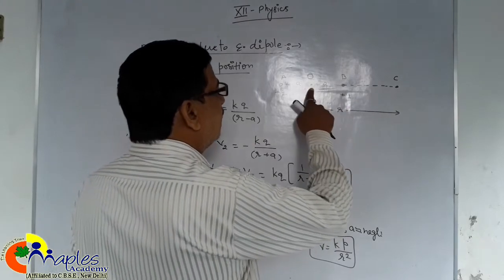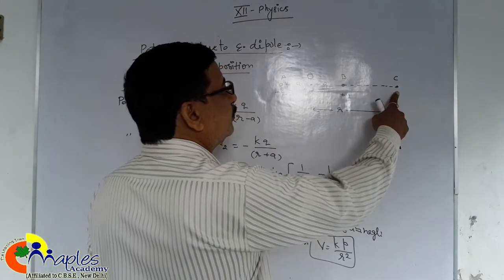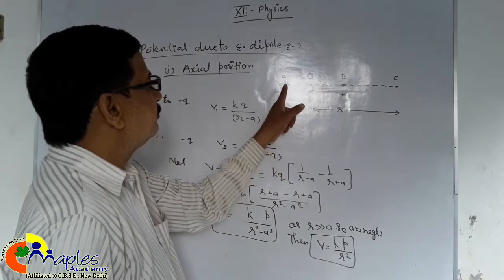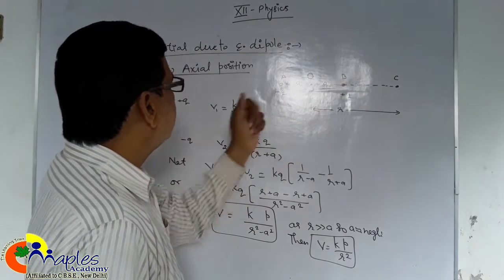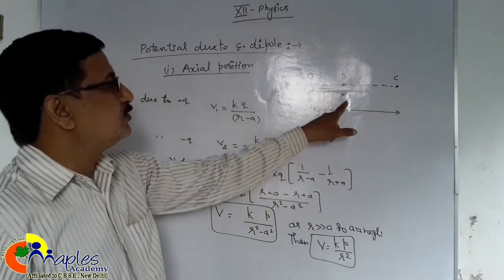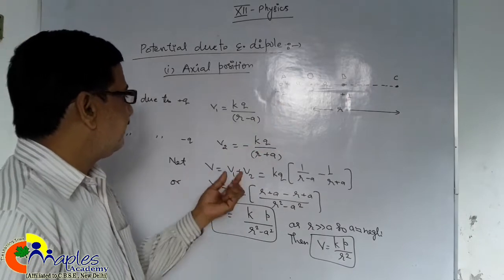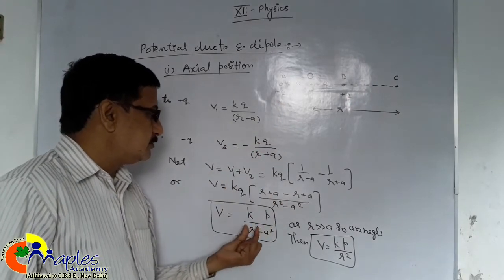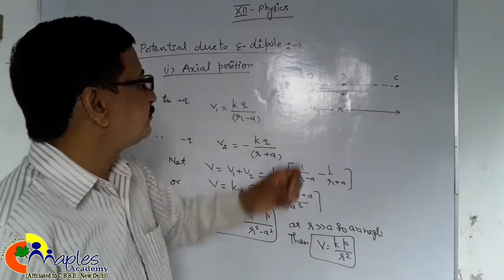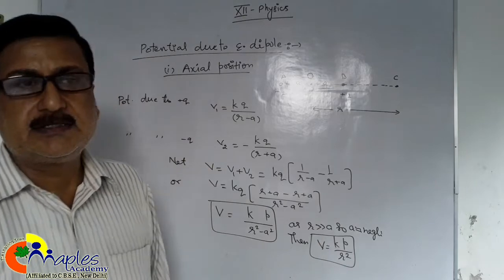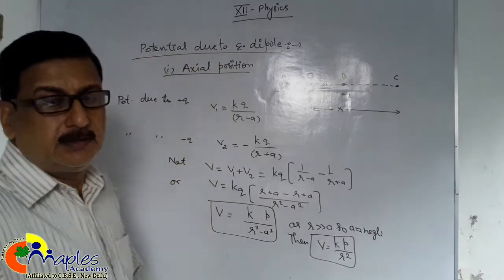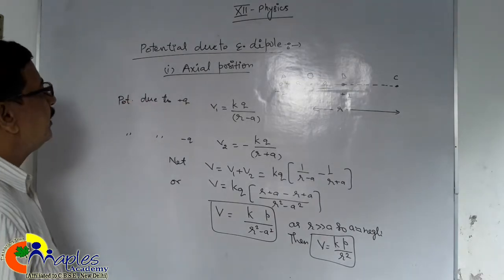Dipole AB, midpoint O. We have to determine potential at C. So distance of C from B is R minus a. Distance of C from A is R plus a. We will write potential at C due to this point charge and this point charge. And net can be found by adding both of them. By solving this we get, and as R is very much greater than a, so a is much less than R. So we get this form. This is the potential due to dipole in axial position.